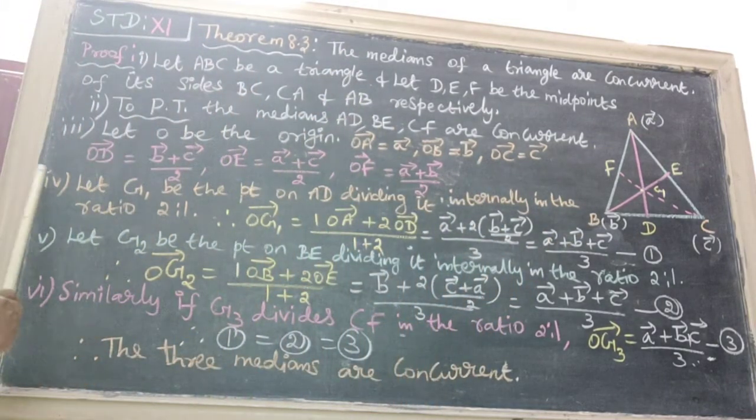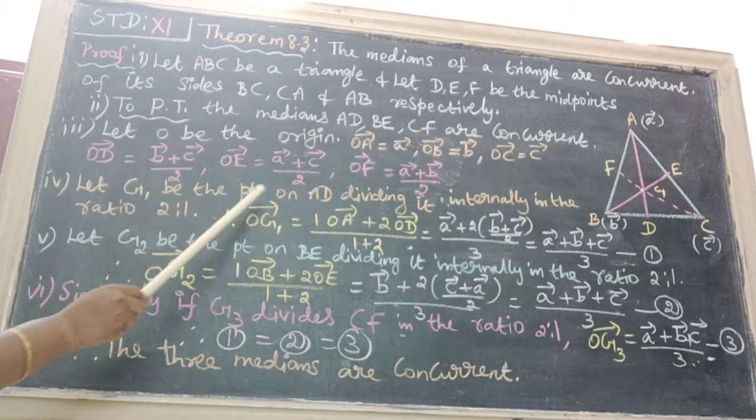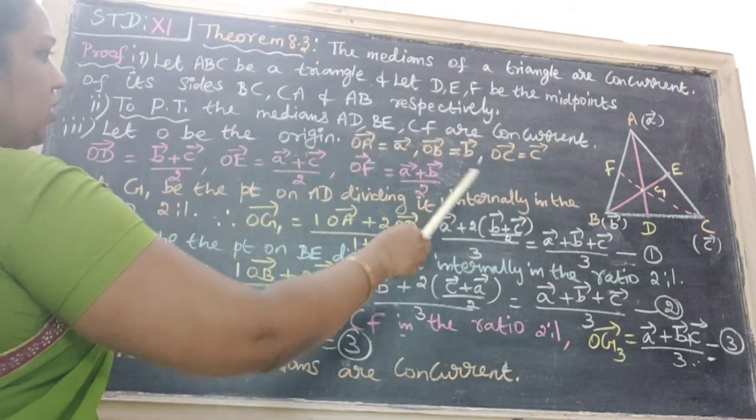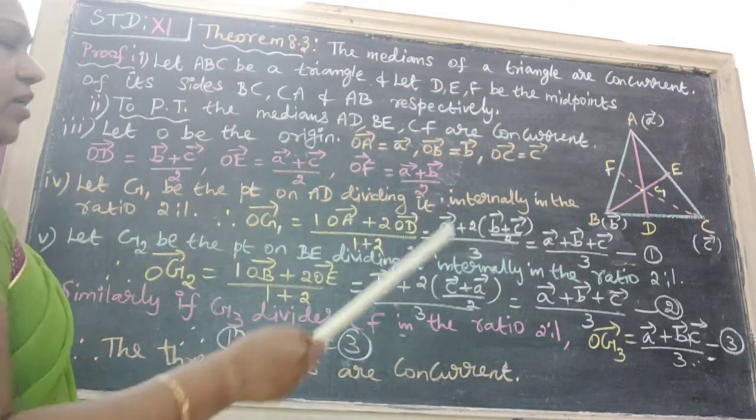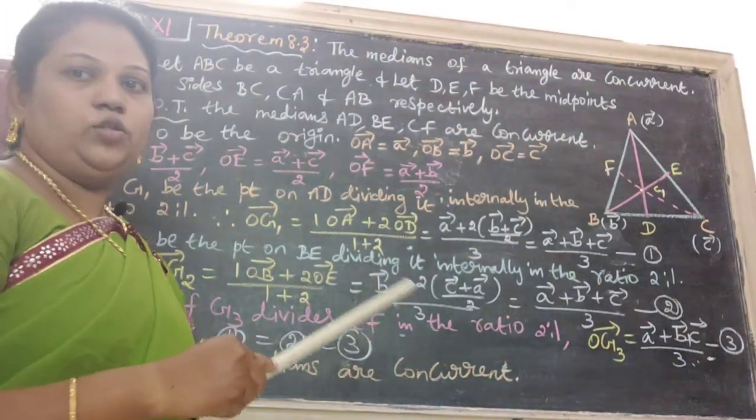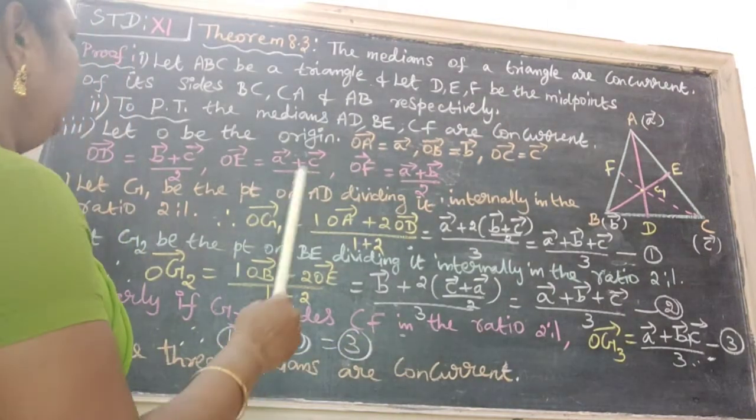Next one, let G1 be the point on AD dividing it internally in the ratio 2:1. Internal ratio formula.